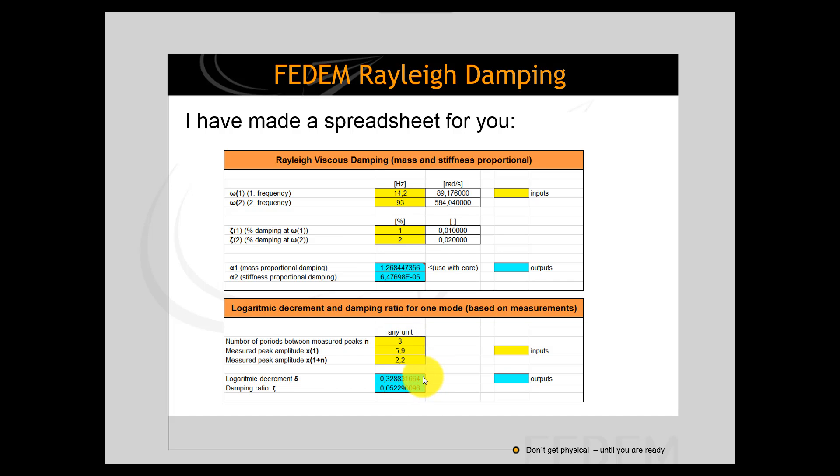And then the spreadsheet calculates the logarithmic decrement for you and also the damping ratio. And if you measure this for each of the two modes that you can apply damping for, you use this spreadsheet to calculate the C value here, which you then enter in this input field. And then you repeat it for the next frequency as well. So you use this spreadsheet to calculate these two values twice.